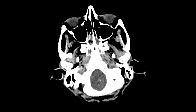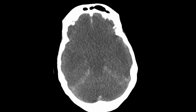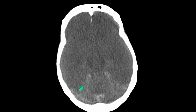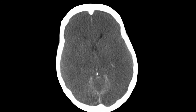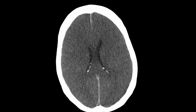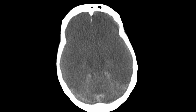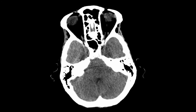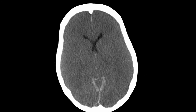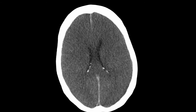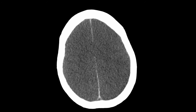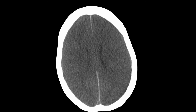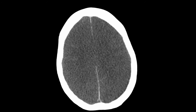Here is the CT of this patient. You can see the pseudo-subarachnoid sign going around the superior sagittal sinus. There is complete effacement of the sulci, effacement of the basal cisterns and effacement of the lateral ventricles. There is global loss of density in the brain parenchyma and the falx appears dense. This is the pseudo-subarachnoid sign.